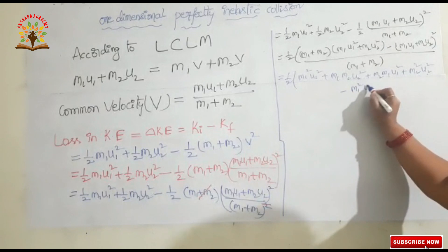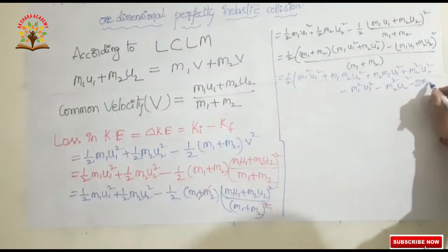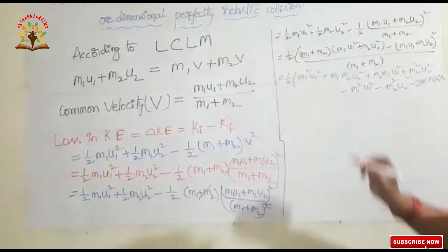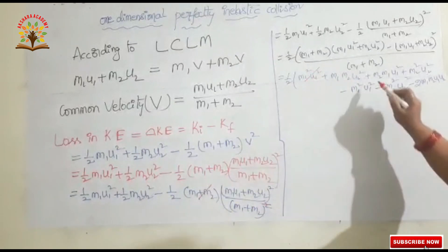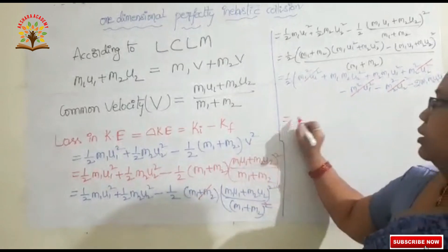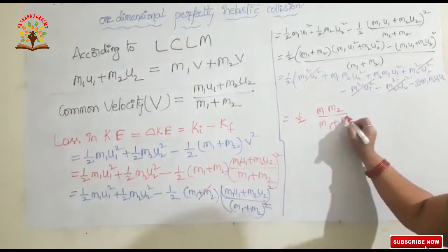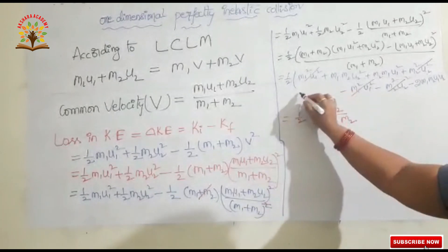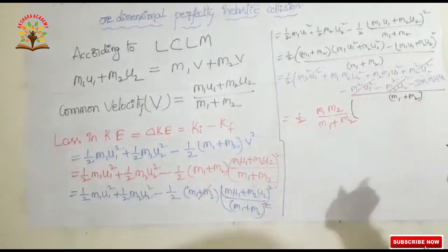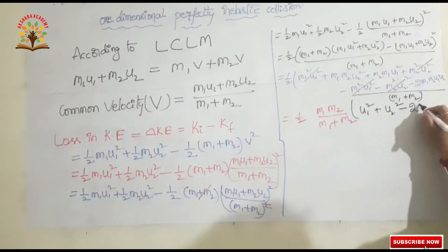So we expand: minus M1²·U1² minus M2²·U2² minus 2·M1·M2·U1·U2. Now cancelling the same terms — M1²·U1² and M2²·U2² cancel — leaving the cross terms, which simplify to M1·M2 / (M1 + M2).